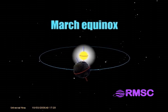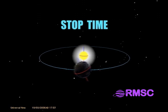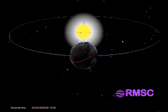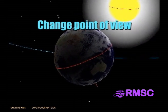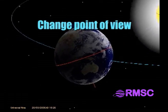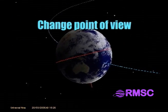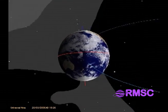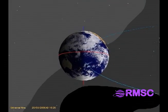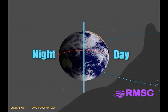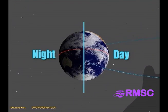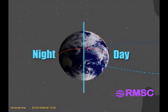First, the March equinox. We'll stop time and change our point of view so we can compare daytime and nighttime on Earth. All parts of Earth get equal amounts of day and night at the March equinox.